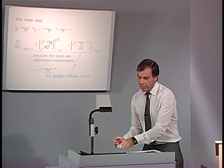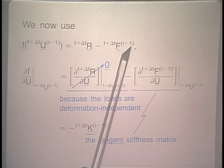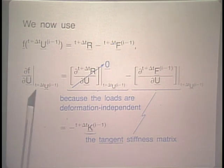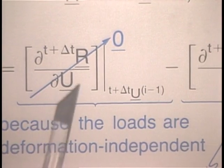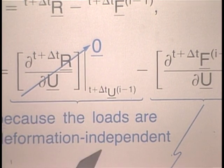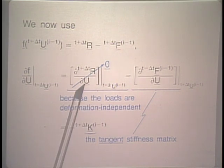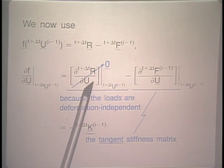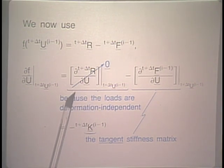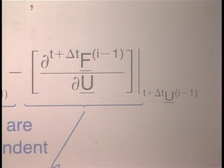Recalling that little f at t+delta_t u_{i-1} equals R minus t+delta_t F_{i-1}, the partial of little f with respect to u is given via this equation. Notice that the partial of R with respect to u is equal to 0 if the loads are deformation independent. If the loads depend on the displacements, then this would not be 0 and we would have to carry that term in the solution. For the moment, we assume that the loads are deformation independent. The partial of capital F with respect to the displacements gives us the tangent stiffness matrix.